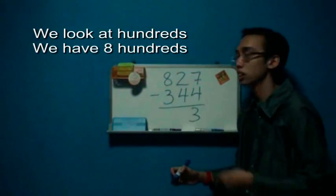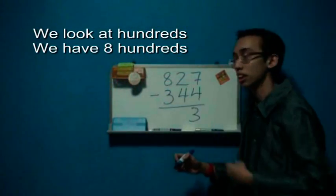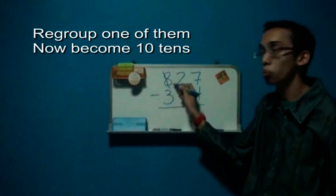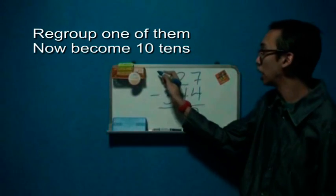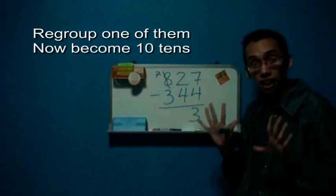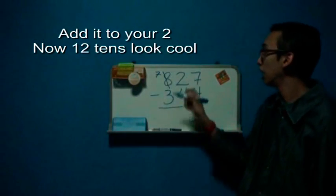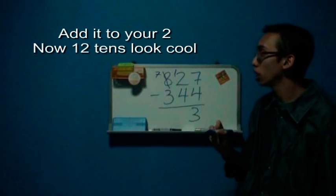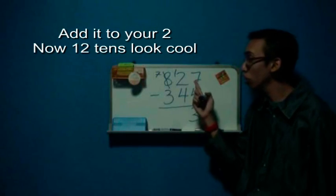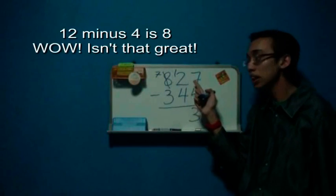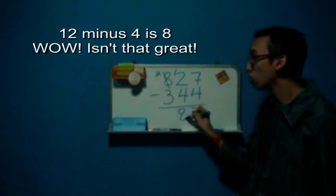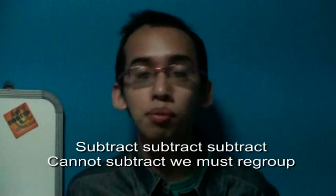We look at hundreds — we have eight hundreds. Regroup one of them, now become 10 tens. Add it to your two, now 12 tens look cool. 12 minus 4 is 8 — wow, isn't that great!